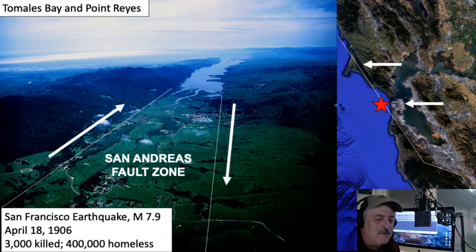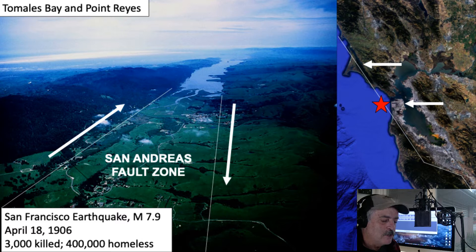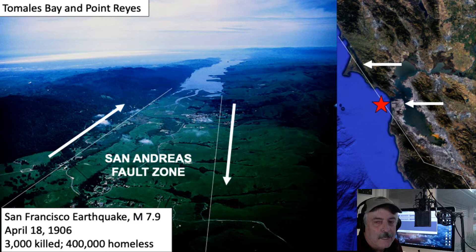On the right-hand side you can see where they've estimated the epicenter was — pretty close to between the Golden Gate Bridge and the Farallon Islands. I've drawn the trace of the San Andreas Fault through here. The Point Reyes Peninsula is at the north end of this satellite image. The reason I mention it is because the Point Reyes Peninsula jumped 20 feet to the north in that earthquake.